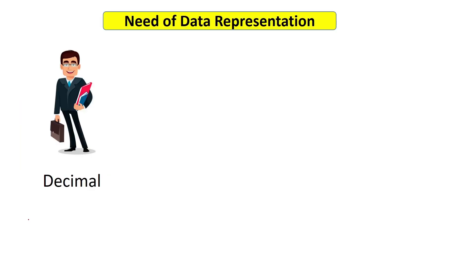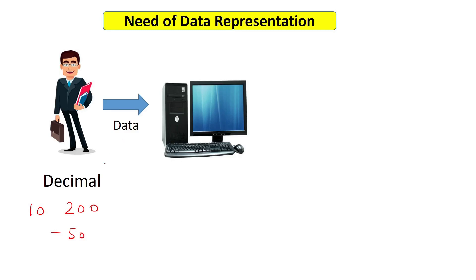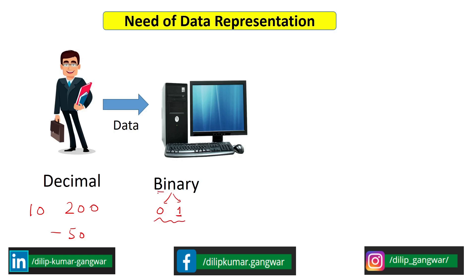Since our childhood, as human beings we are comfortable with decimal numbers. For example we write 10, 200, minus 50 — all these numbers are in the decimal number system. But when we give these decimal numbers or data to a computer, the computer does not understand them. The computer understands only one type of numbers: binary numbers. Binary numbers consist of only two bits, 0 and 1, and all numbers are made by combinations of 0 and 1 in the binary number system.